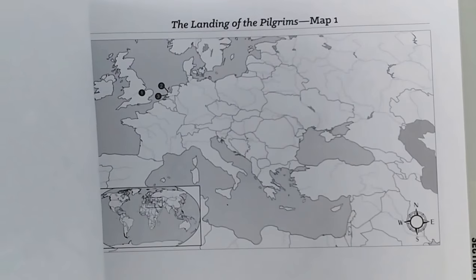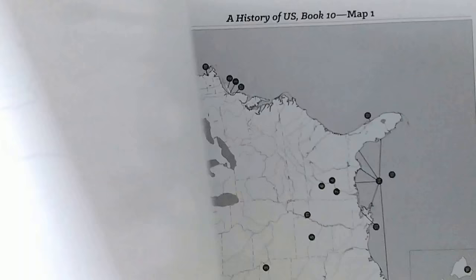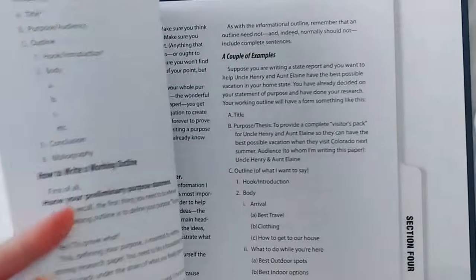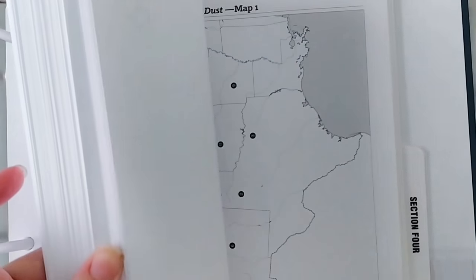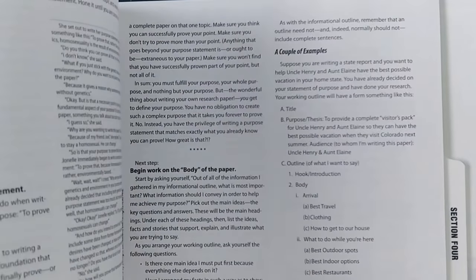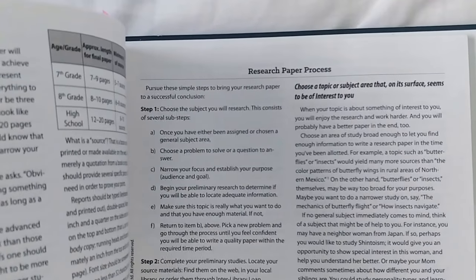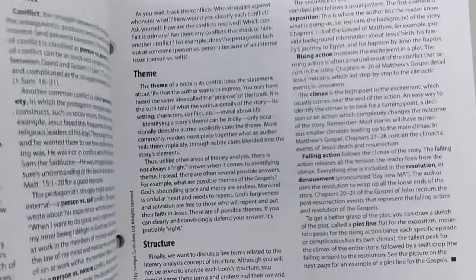They also have maps that go along with the literature he's reading throughout the year — not only historical maps, but maps tied to his literature reading. In the back of this section there is extra material as well: how to write papers, a lot about geography and spelling, language arts things, and how to write a working outline. That helped him a lot with writing a research paper — that was instrumental this year. I really appreciated them including that.